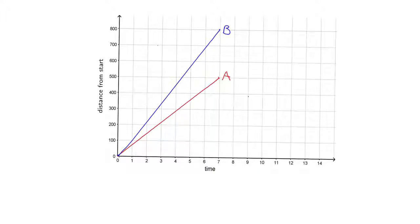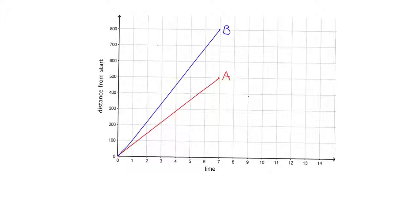Graphs can also give us more information. Let's go again with people going on a walk, looking at the distance from the start against time in minutes. In this case we've got two people — person A and person B — they've both gone for a walk and I've drawn their story onto the graph, showing their distance from the start against time. Now we can start asking ourselves questions about this.